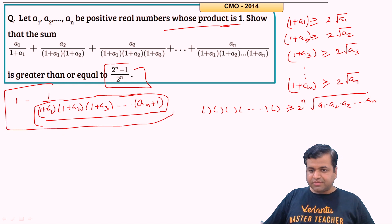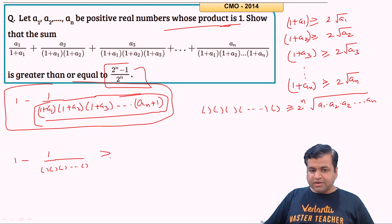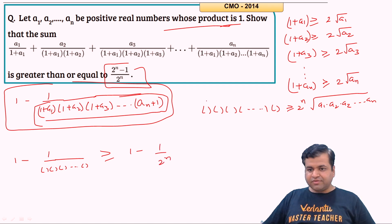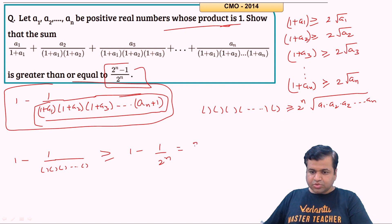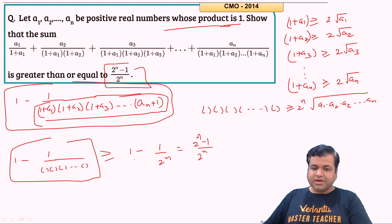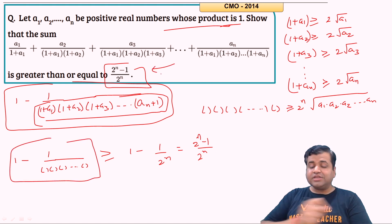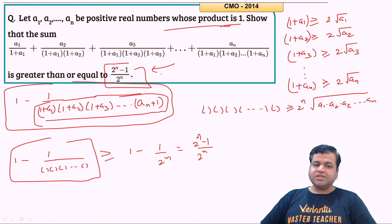So the entire expression 1 − 1/((1+A1)···(1+AN)) is greater than or equal to 1 − 1/2^n, because the denominator is at least 2^n, and flipping a larger denominator gives a smaller fraction — with the negative sign, the inequality direction is preserved. This equals (2^n − 1)/2^n, which is exactly what we needed to prove.